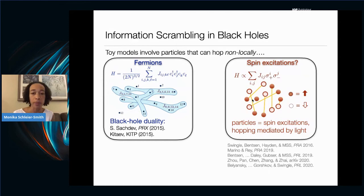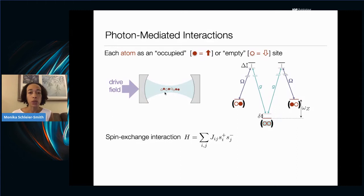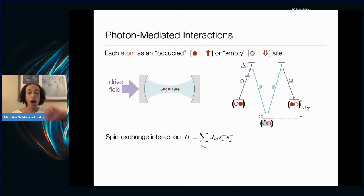The general approach is to have an optically controlled process where one atom flips its spin, emits a photon into a resonator, and another atom absorbs that photon and flips its spin. A control field drives a Raman process that would flip a single spin if resonant. That single-spin process is kept off-resonant, but the system is designed so that the pairwise flip-flop process of exchanging a photon is resonant, giving rise to a spin exchange interaction.